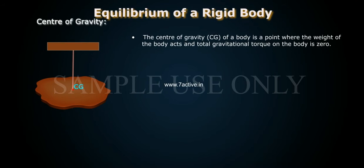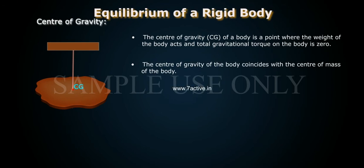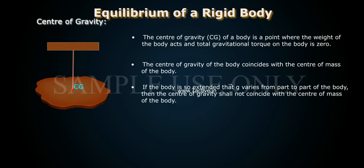Center of Gravity: The center of gravity, CG, of a body is a point where the weight of the body acts and total gravitational torque on the body is zero. The center of gravity of the body coincides with the center of mass. If the body is so extended that gravitational acceleration varies from part to part, then the center of gravity shall not coincide with the center of mass.